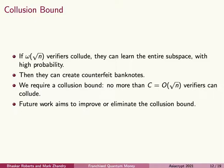In the future, we hope to improve or eliminate the collusion bound. I'm optimistic that this is possible because that's the trajectory that traitor tracing followed. Traitor tracing is a form of encryption that was vulnerable to colluding adversaries. Early constructions used a collusion bound that grew linearly with the ciphertext size — here, the ciphertext size is analogous to our banknote size. After a series of improvements, GKW18 gave a construction of traitor tracing where the collusion bound grew exponentially in the ciphertext size.